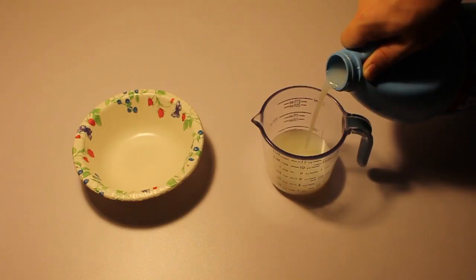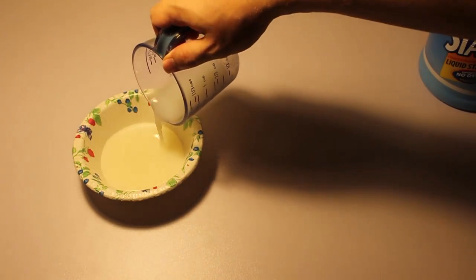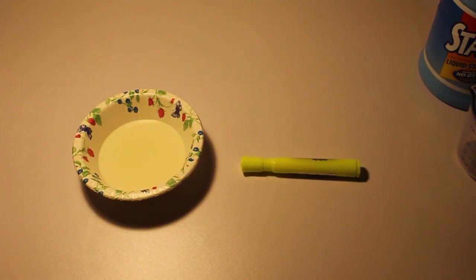I'm going to be using liquid starch but you can use borax as well. Just mix a tablespoon of it with about half a cup of water. But I found borax a lot harder to come by. With the liquid starch just add half a cup of it to a bowl. Now add your dye of choice.